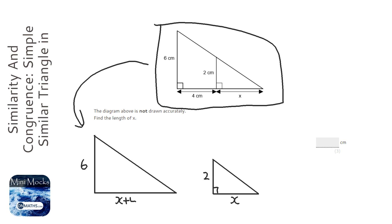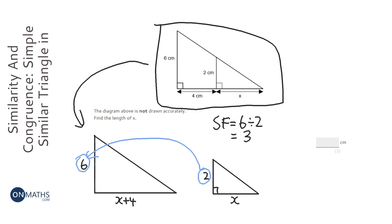Okay so because they're an enlargement, we've got to work out the scale factor. So what do I times the 2 by to get to the 6? So the scale factor is going to be 6 divided by 2, always bigger divided by smaller, which is 3. Okay so I times anything on the smaller triangle by 3 to get the length on the bigger triangle.